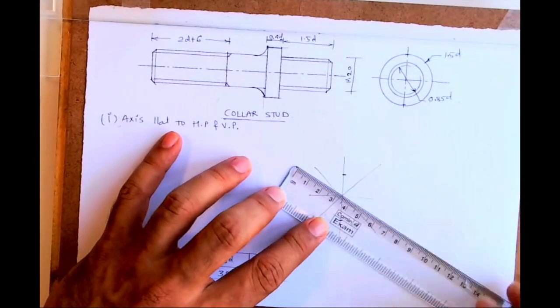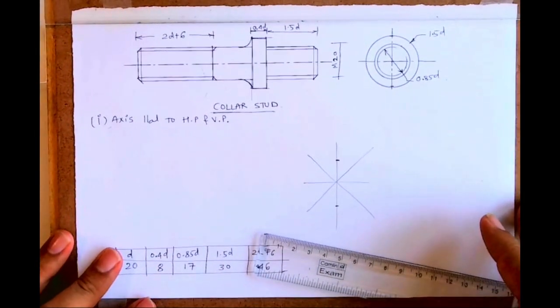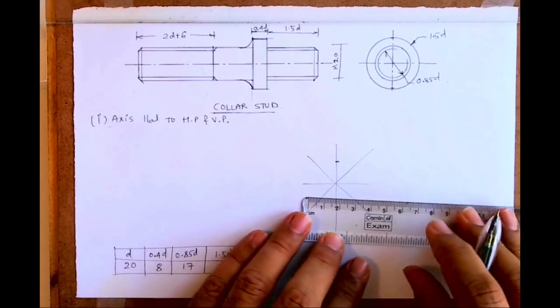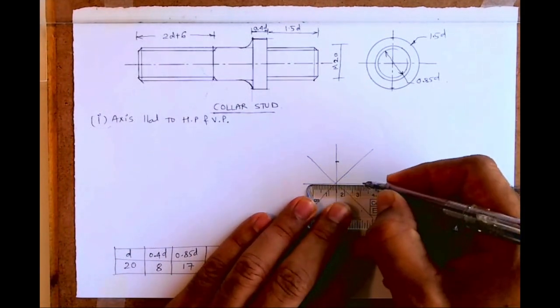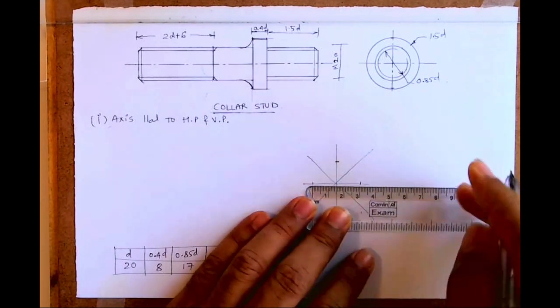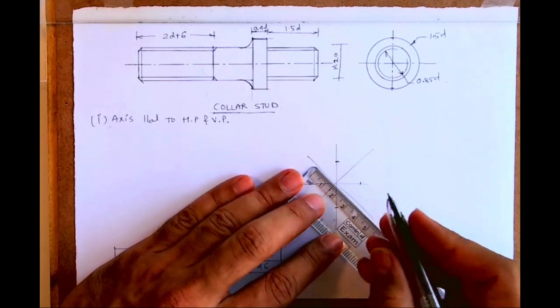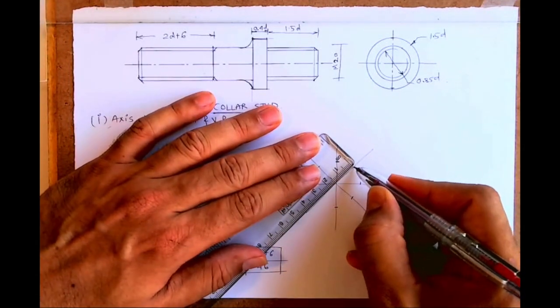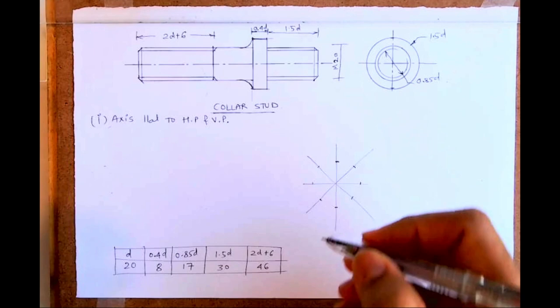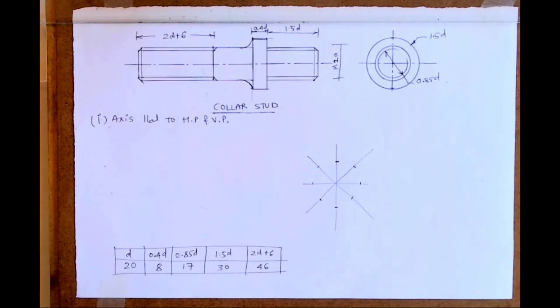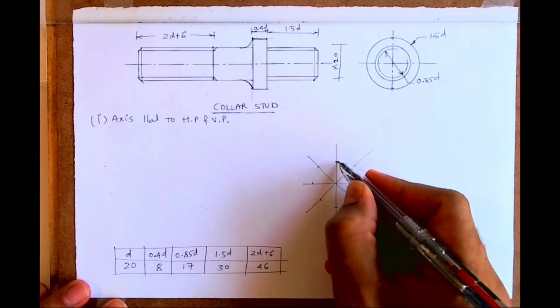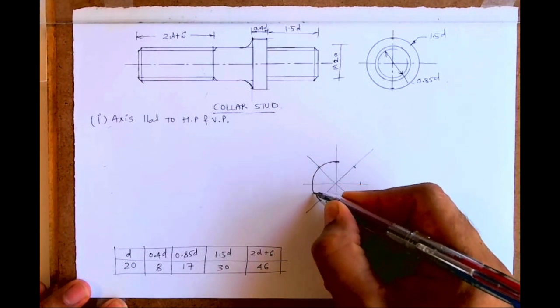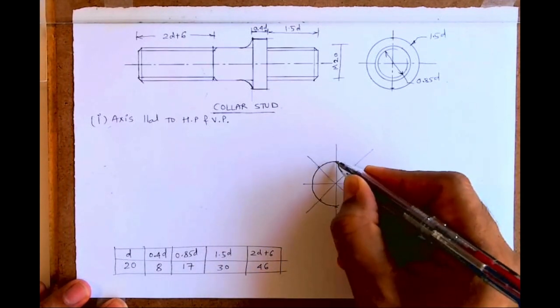We'll mark 15, 15. Total is 30, right? At the 1.5D. In freehand, you can use scale for marking the dimensions. This is left side, so you draw left and then right side.